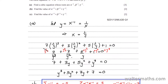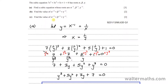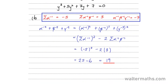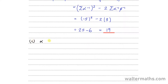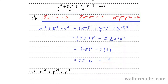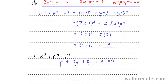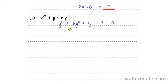Let's go on to part C. Find the value of alpha to the power minus 3 plus beta to the power minus 3 plus gamma to the power of minus 3. We are going to make use of the new equation which we got: y cubed plus 5y squared plus 3y plus 7 equal to 0. What I'm going to do here is make y cubed the subject. So that's y cubed equal to minus 5y squared minus 3y minus 7.